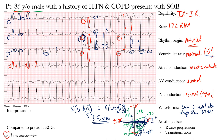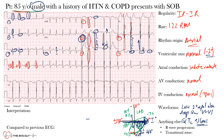The QTc — the corrected QT interval, correcting for heart rate using the Bazett formula — was prolonged at 516 milliseconds. Normal QTc is about 440 milliseconds or less for males and 460 milliseconds for females. When the QTc is around 500 or above, we become concerned about administering certain medications. For example, giving ondansetron (Zofran) to this patient may not be ideal, as it could precipitate a ventricular arrhythmia.